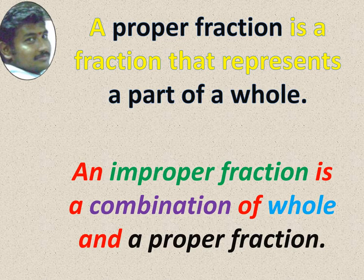A proper fraction is a fraction that represents a part of a whole, for example, 5 by 7. An improper fraction is a combination of whole and a proper fraction. Improper means 7 by 5. Numerator will be greater, denominator will be smaller.